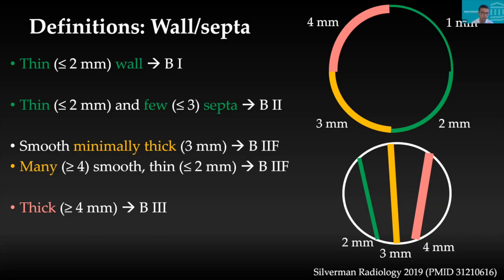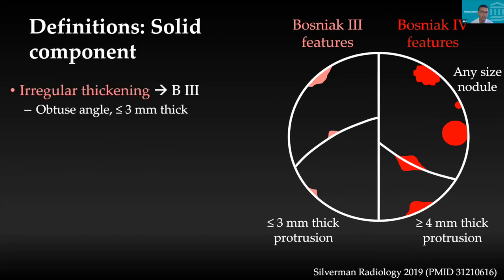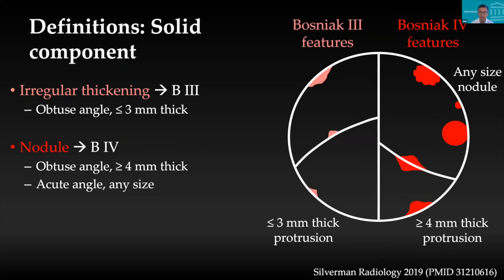For the solid component definition — important for type III and IV lesions: if you see irregular thickening with obtuse angles measuring up to 3 mm in thickness, that is type III. If thickness is 4 mm or more with enhancement, that is a type IV lesion. If you see a nodule with acute angles, size doesn't matter — even 1–2 mm nodules with acute angles would be classified as Bosniak type IV.